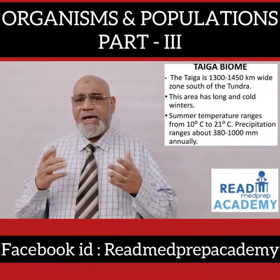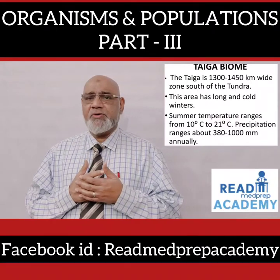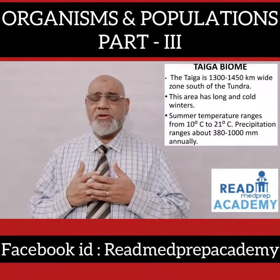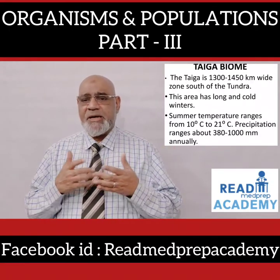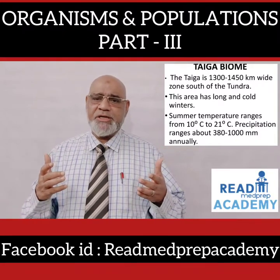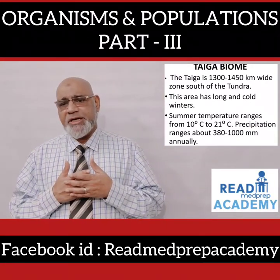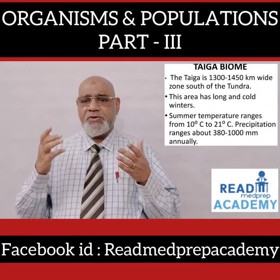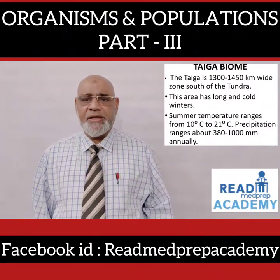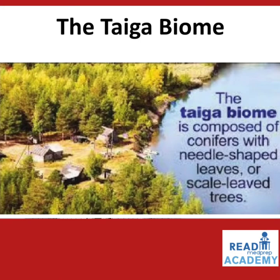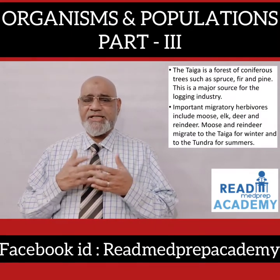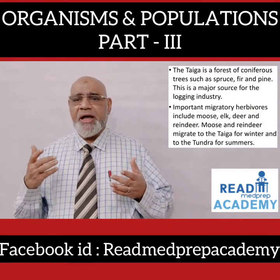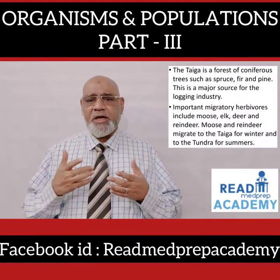The taiga biome is a 1,300 to 1,450 km wide zone south of the tundra. This area has long and cold winters. Summer temperature ranges from 10 to 21 degrees centigrade. Precipitation ranges about 380 to 1,000 mm annually. The taiga biome is composed of conifers with needle-shaped or scale-leaved trees — a forest of conifers such as spruce, fir, and pine. This is a major source for the logging industry.